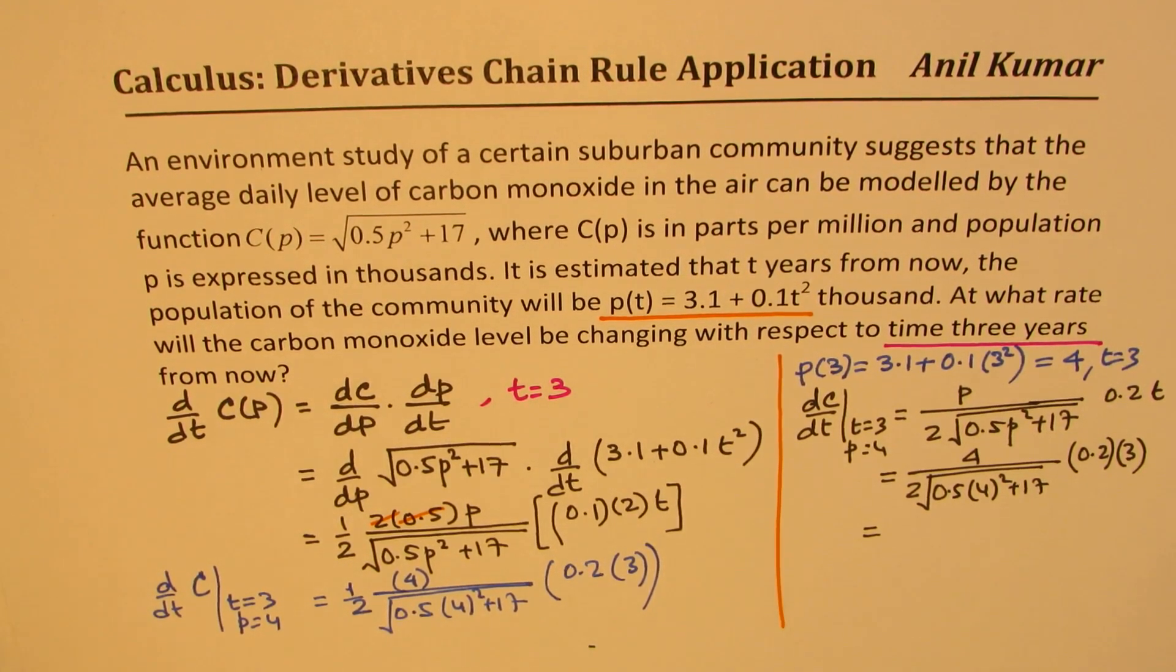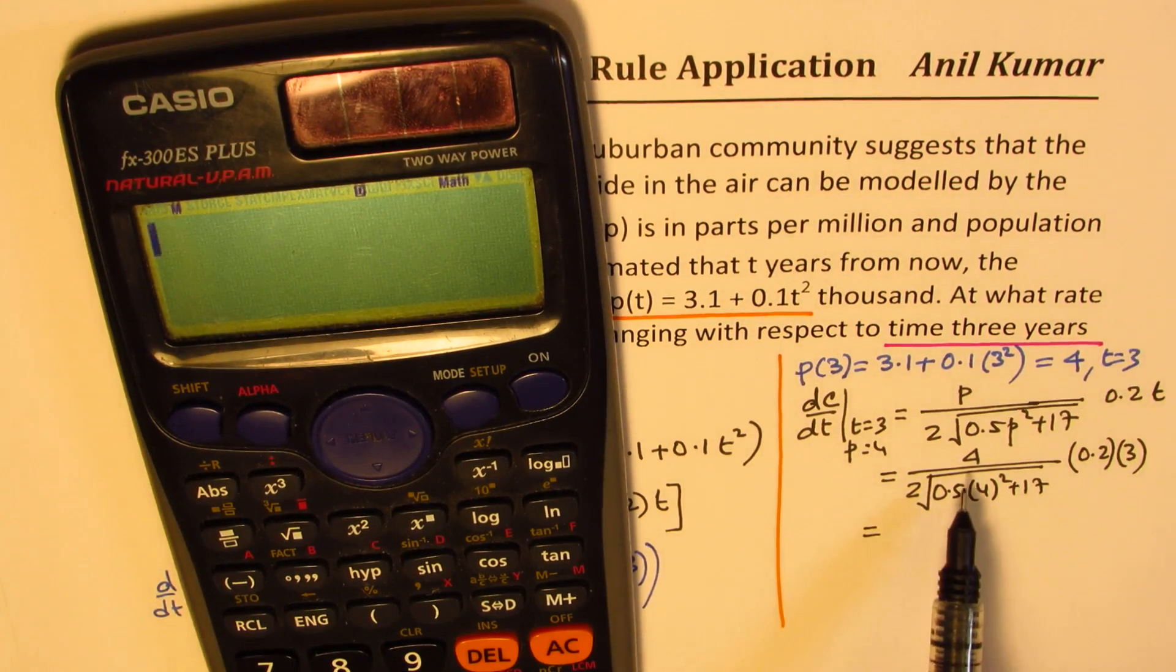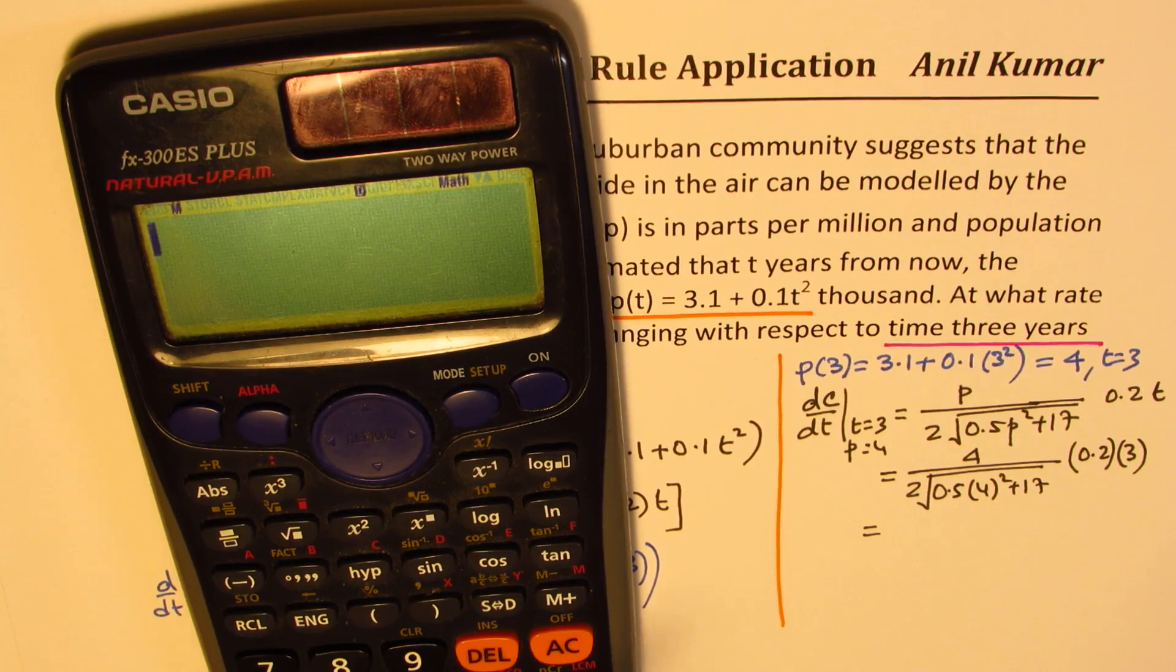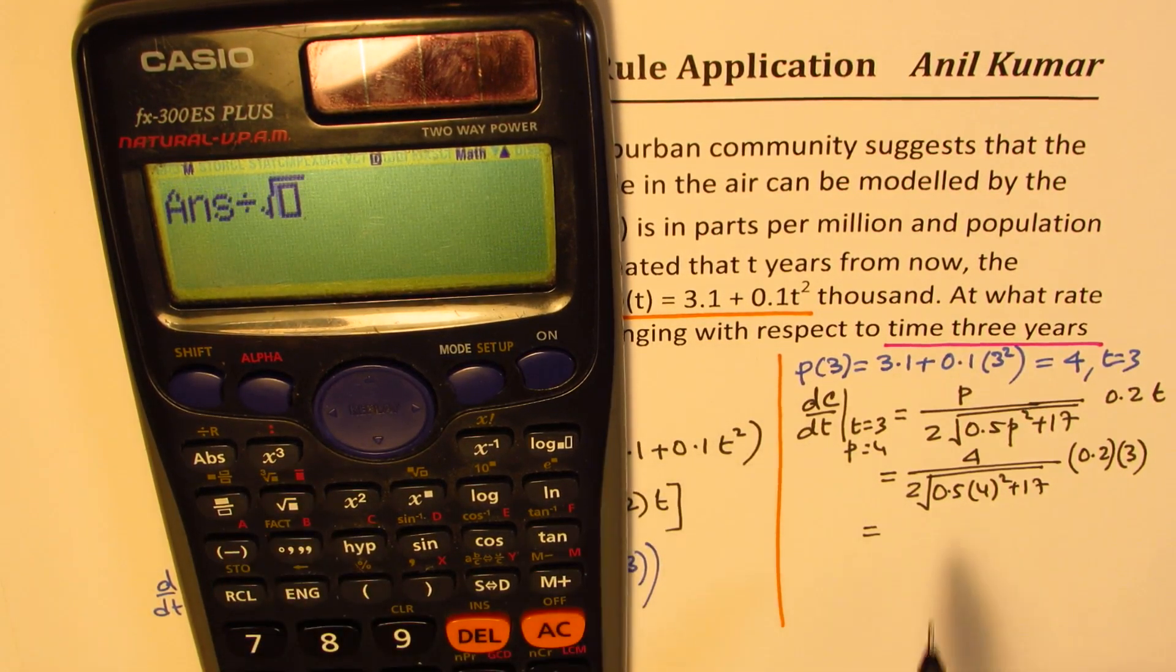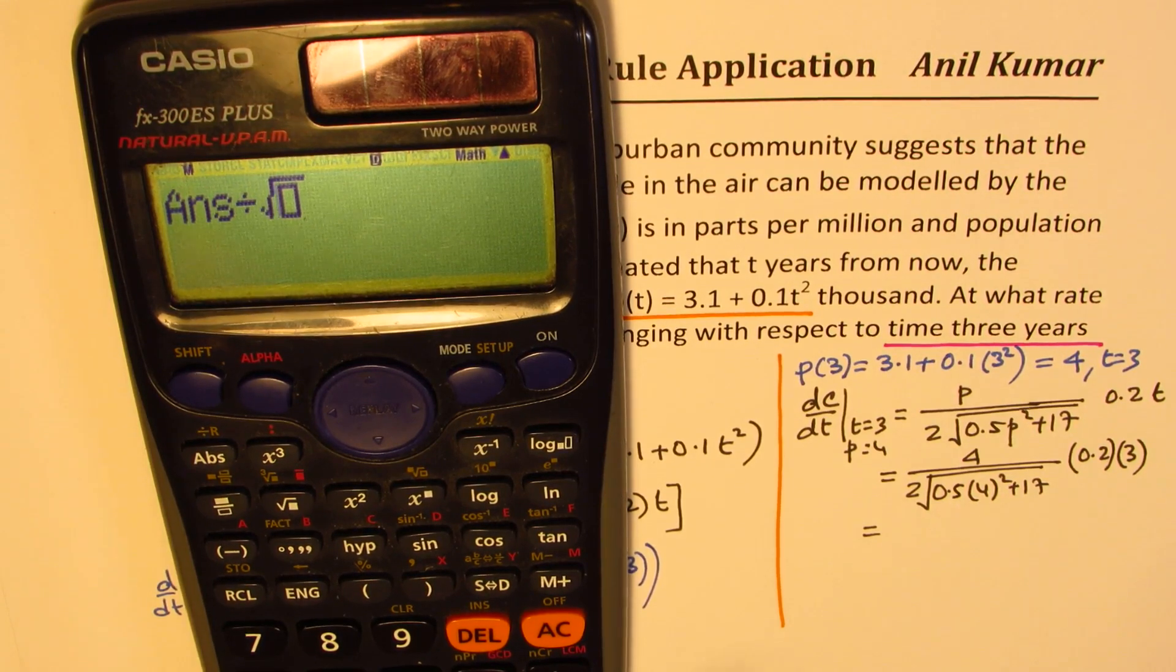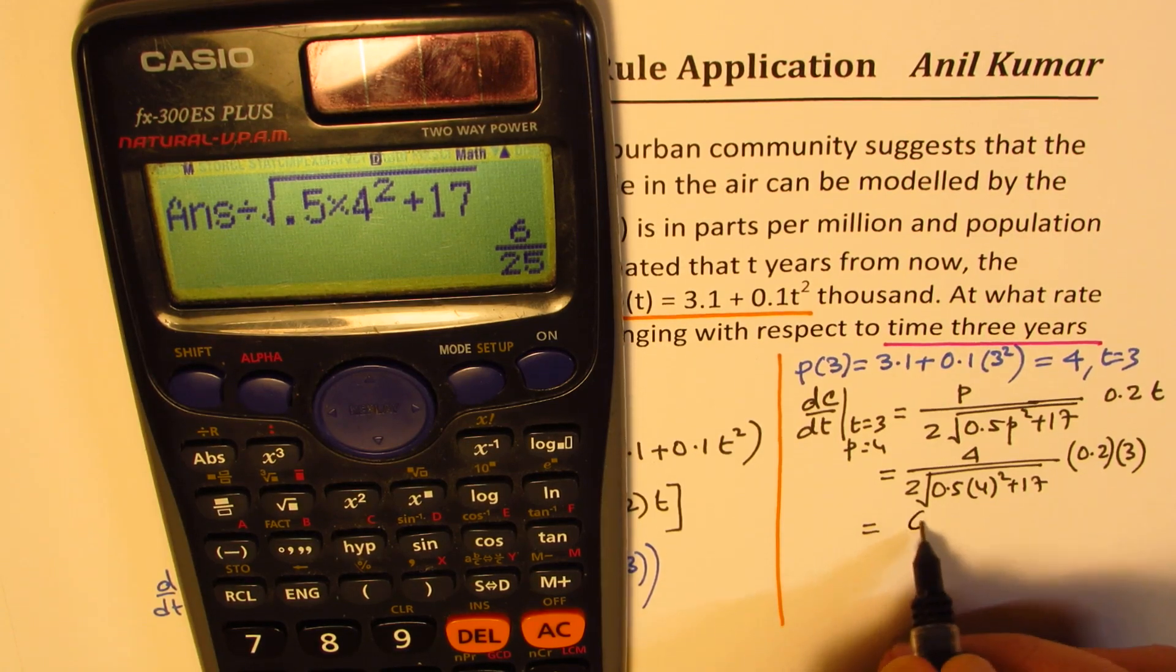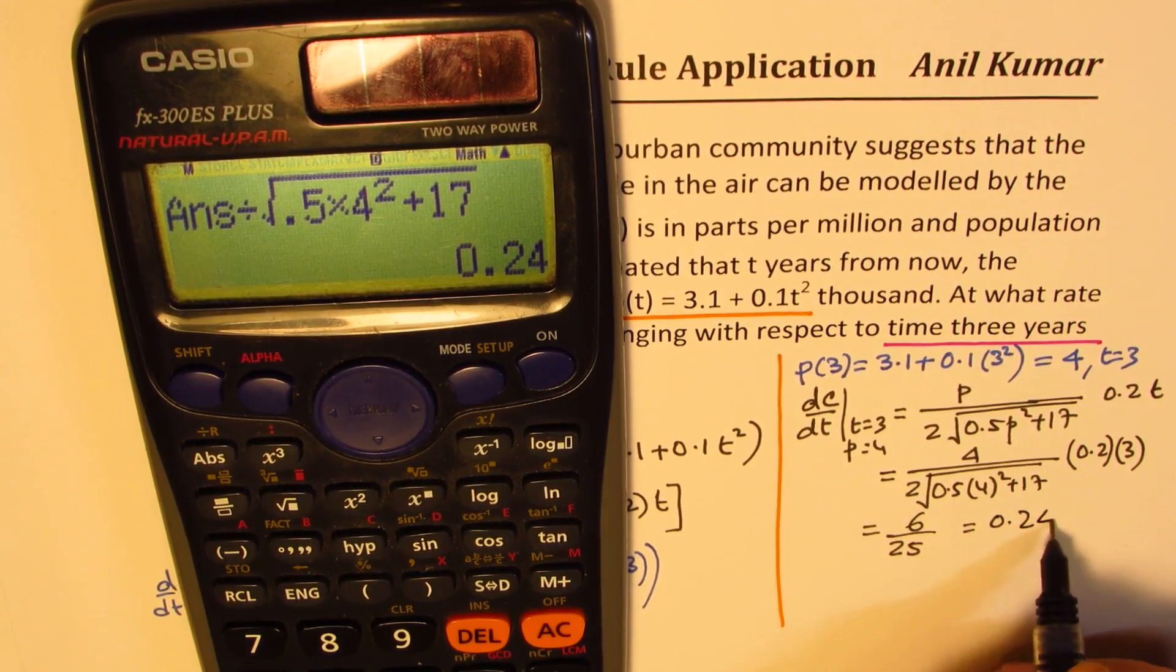Let's use calculator. We can do actually without calculator also. So 4 divided by 2 is 2. So we get the numerator, which is 4 times 0.2 times 3, divide by 2. Then we'll divide by square root of all this, which is 0.5 × 4² + 17, which is equal to 6 over 25. In decimals, we get this as 0.24.